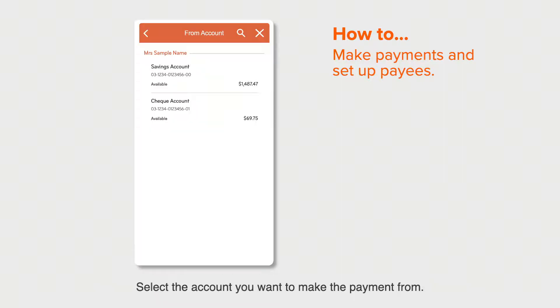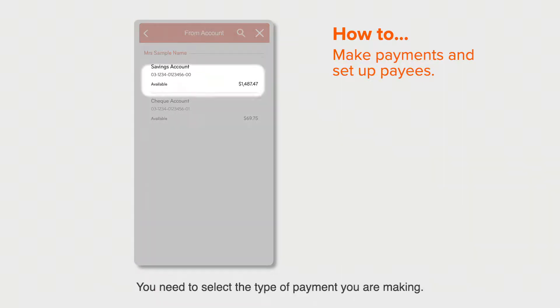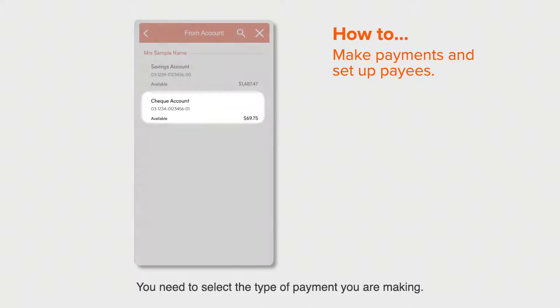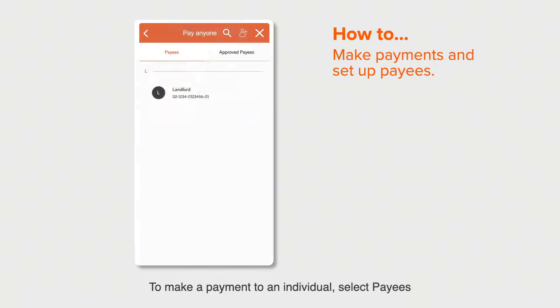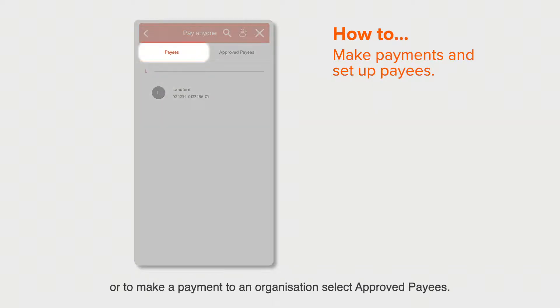Select the account you want to make the payment from. You need to select the type of payment you are making. To make a payment to an individual, select payees, or to make a payment to an organization, select approved payees.